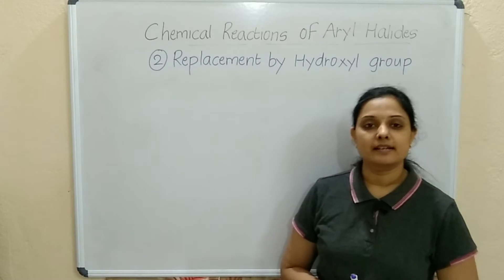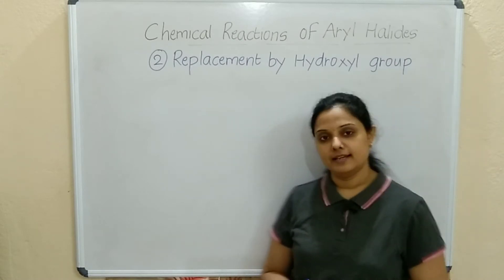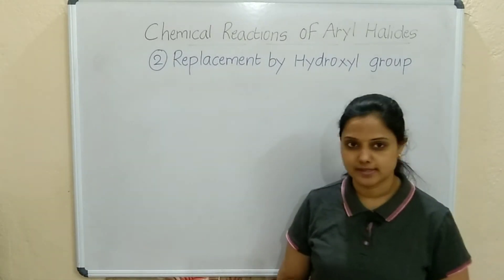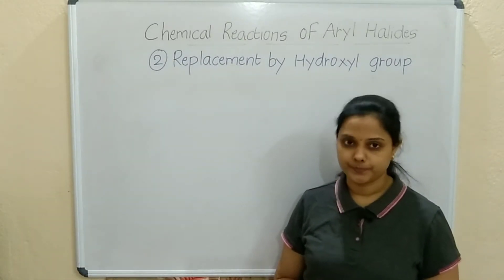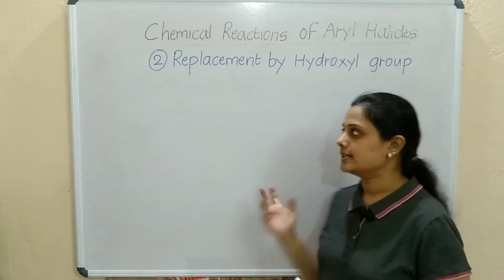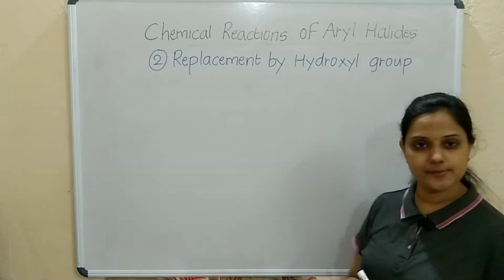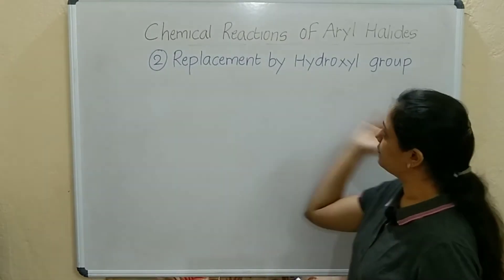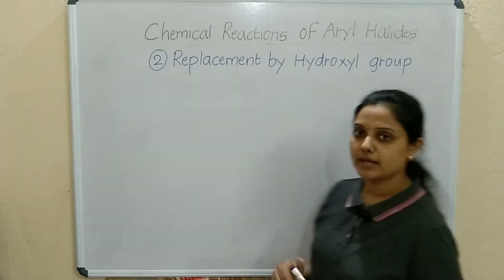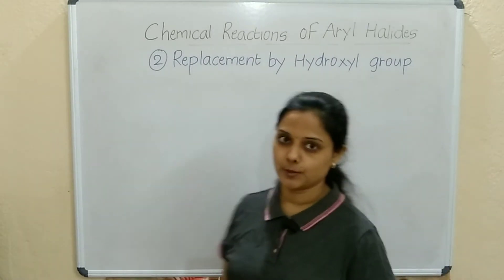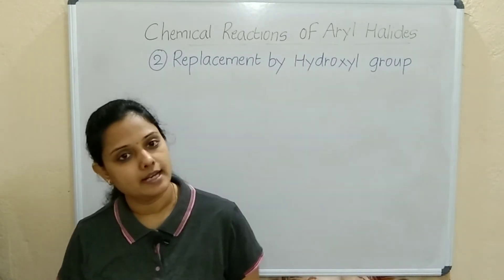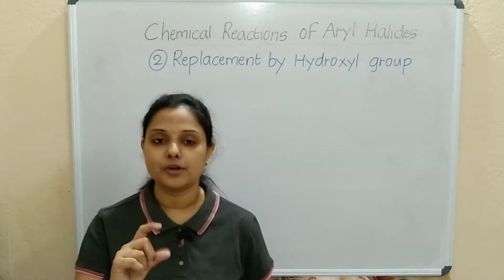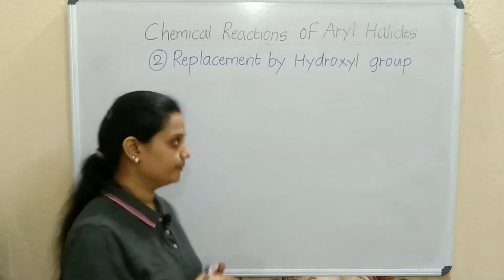The second chemical reaction of aryl halides is replacement by hydroxyl group. Here, two types are there. The halogen is replaced by the hydroxyl OH group.